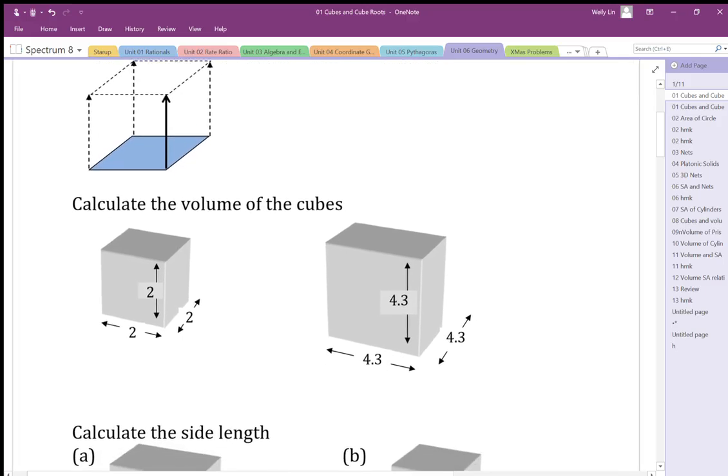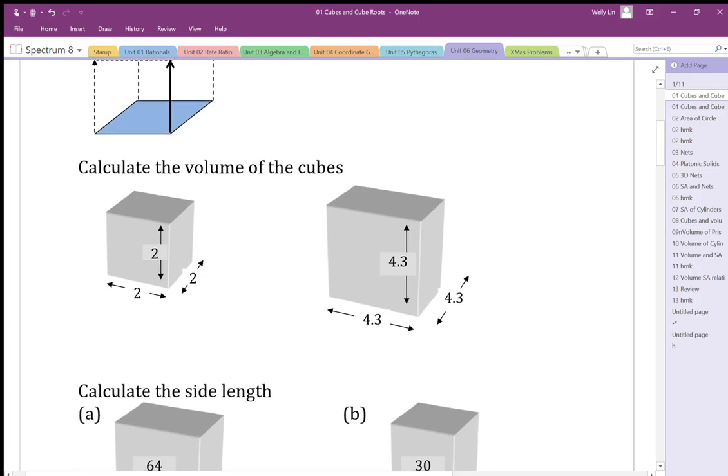So taking a look at these examples here, if I want to calculate the volumes of these cubes, I could do length times width times height. So if I do that, I get 2 times 2 times 2, which is 8 units cubed.